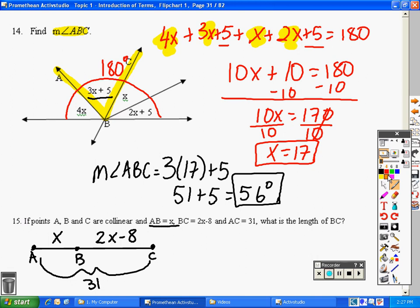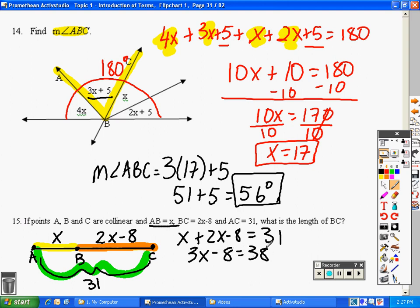So, segment addition postulate says if I take one piece of a segment, add to it another piece, I will get the whole segment. So we're going to write an algebraic expression to show that: X plus 2X minus 8 equals the whole segment, 31. We're going to get 3X minus 8 equals 31.